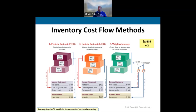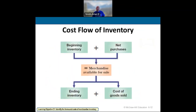A company that would use specific identification would be one with high-ticket items — like diamonds, precious metals, or custom jewelry — because they know exactly how much they paid for each piece. A reminder about the cost flow of our inventory: we take beginning inventory, add net purchases, and that equals merchandise available for sale. Alternatively, ending inventory plus cost of goods sold also equals merchandise available for sale. Given three of these factors, you can algebraically identify the others.